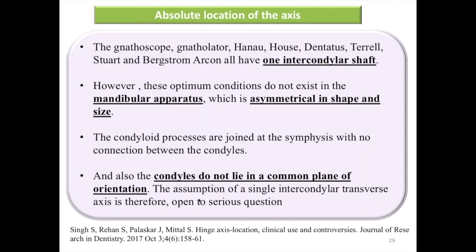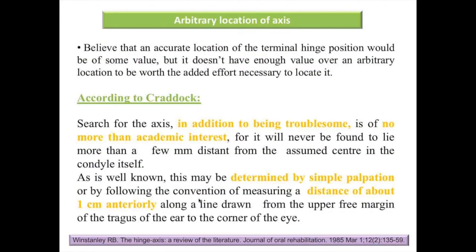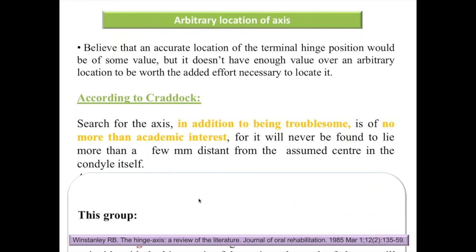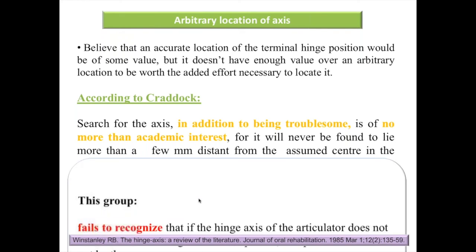The arbitrary location school believes that accurate location of the terminal hinge position has some value, but not enough over arbitrary location to be worth the added effort. According to Cathroc, the search for the axis is troublesome and of no more than academic interest, as it will never be found more than a few millimeters from the assumed center. The arbitrary axis may be determined by simple palpation, or by measuring approximately 1 cm anteriorly along a line from the upper free margin of the tragus of the ear to the corner of the eye. This group fails to recognize that if the hinge axis of the articulator does not coincide with the hinge axis of the patient, the path of closure will not be the same.